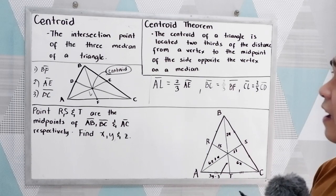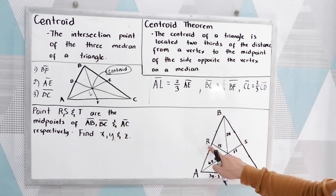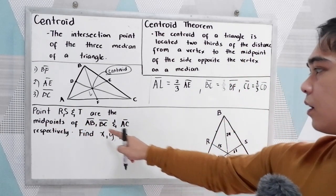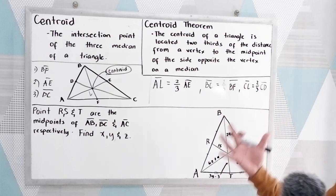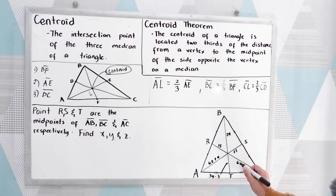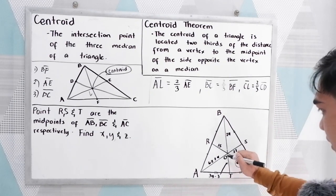To better understand the centroid and centroid theorem, let's have this problem. Points R, S, and T are the midpoints of AB, BC, and AC respectively. Find X, Y, and Z. We're going to apply the centroid theorem. Let's name the centroid as O.